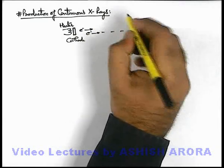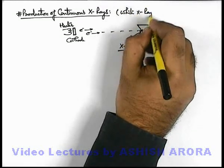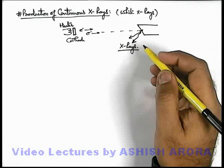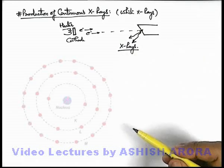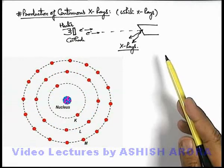This is the reason because all wavelengths are present these x-rays are also called white x-rays. Now just to understand the production mechanism let's have a look on this picture which is an atom of this anode material.